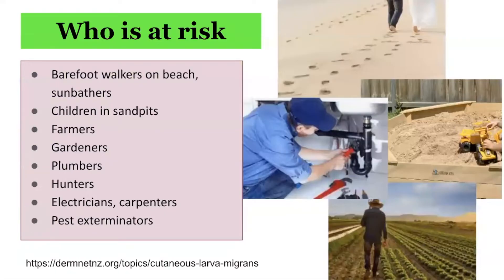Who is at risk of cutaneous larva migrans? It is essentially people whose hobbies or occupations put them in contact with contaminated soil. This includes barefoot walkers on the beach, sunbathers, children in sand pits, farmers, gardeners, plumbers, hunters, electricians, carpenters, and pest exterminators.